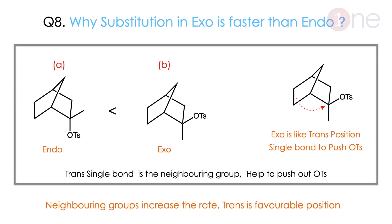Next: why is substitution in B faster than A? A and B differ in the position of OTs — in A, OTs is endo (inside); in B, OTs is exo (outside). For neighboring group participation, there should be sufficient space for backside approach and the leaving group should be trans. B is in a better position to kick out OTs, so B is the faster reaction. Neighboring group increases the rate when it is in trans position.